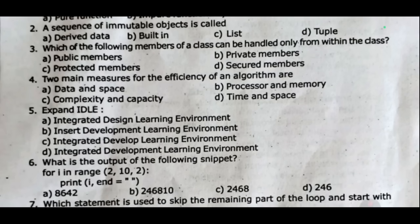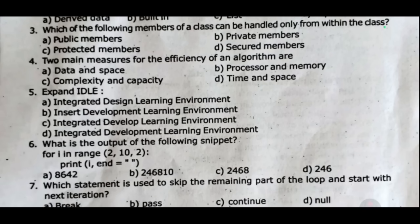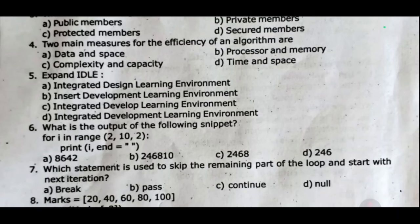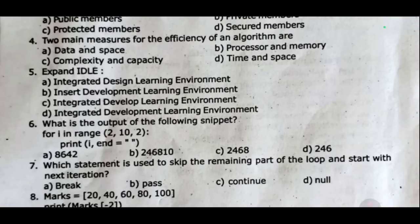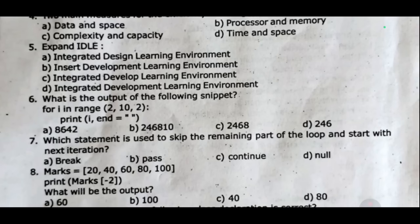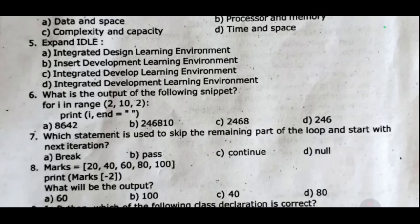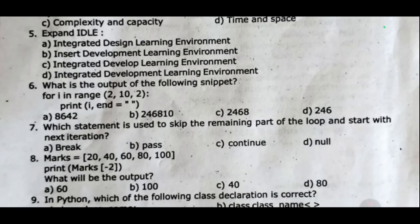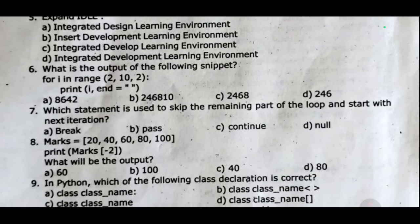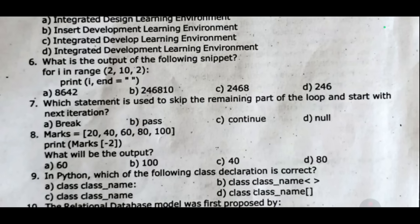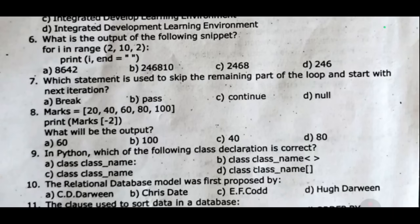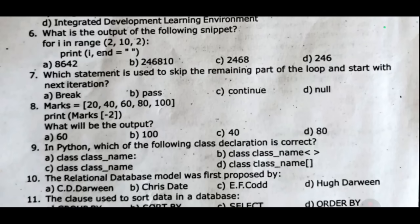Question 6: What is the output of the following snippet — pass — either can output. Question 7: Which statement is used to skip the remaining part of the loop and start with the next iteration? Question 8: marks equal to [20, 40, 60, 80, 100], print marks[-2] — what will be the output? Question 9: In Python, which of the following class declarations is correct?